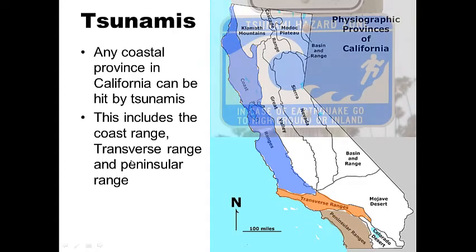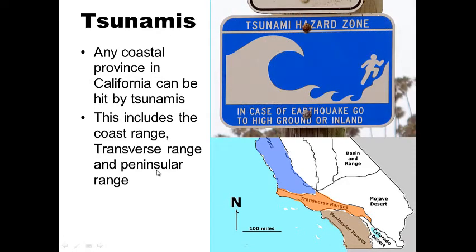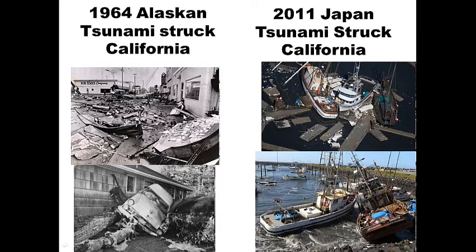Tsunamis — any place near the coast is at risk, so that includes the Coastal Range, the Transverse Range, and the Peninsula Range. You may have seen tsunami warning signs if you live near the coast: in case of a tsunami, head to high ground. The 1964 Alaskan earthquake sent a tsunami down California's coastline, and Crescent City was hit the hardest. The 2011 Japan earthquake created a tsunami that struck California again — Santa Cruz and Crescent City were hit hardest, causing millions of dollars in damage.